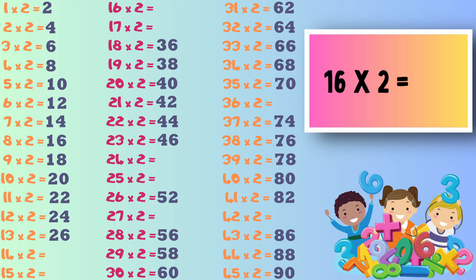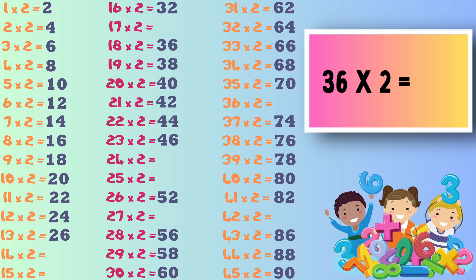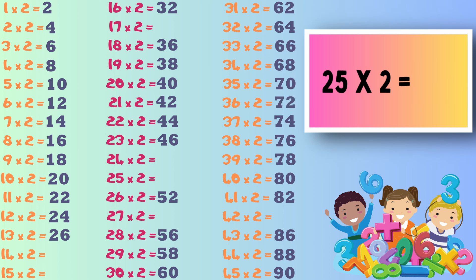Next up we have 36 times 2, the answer to this one is 72. Now it's 25 times 2, that's right it's 50. Next it's 24 times 2, so the answer to this one is 48.